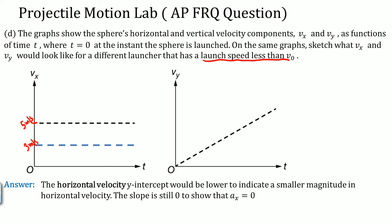For the vertical velocity, it is the same. The vertical velocity intercept will not change. The slope here will always still be 9.8 to show that the acceleration in the y direction is still g, which is 9.8.